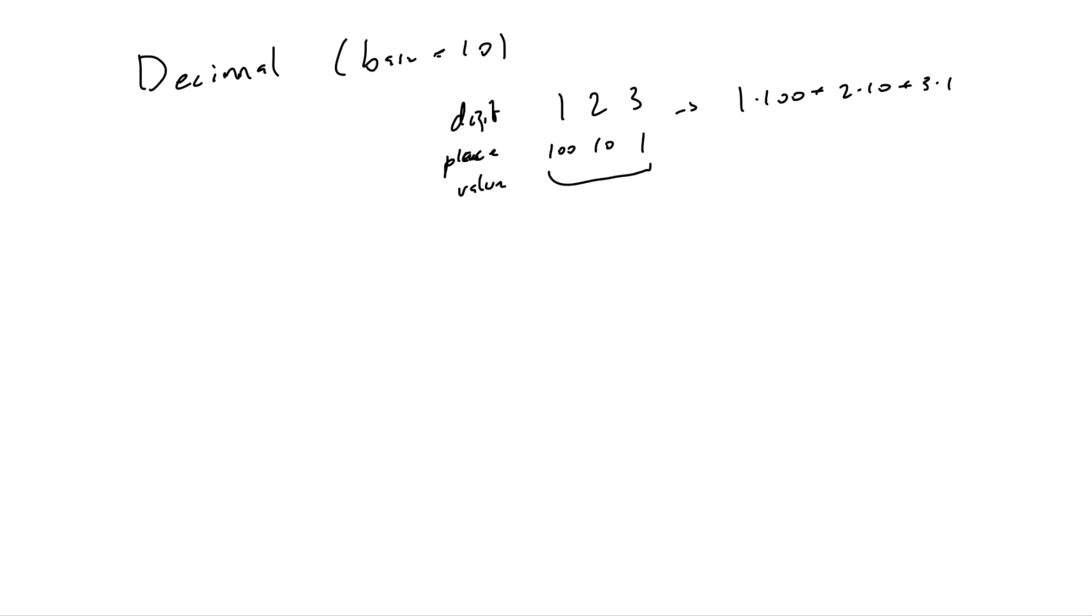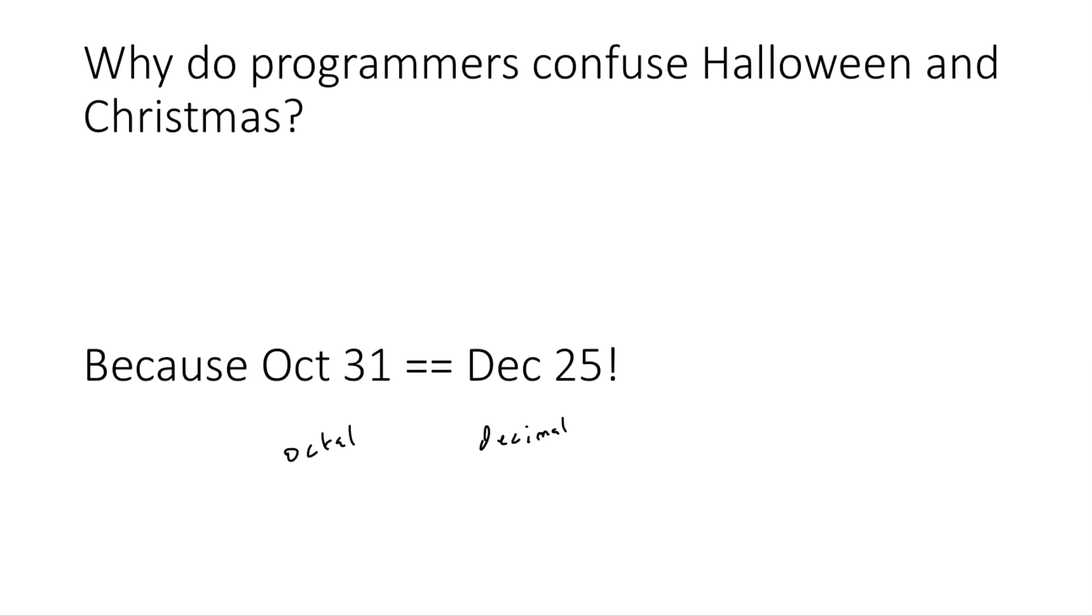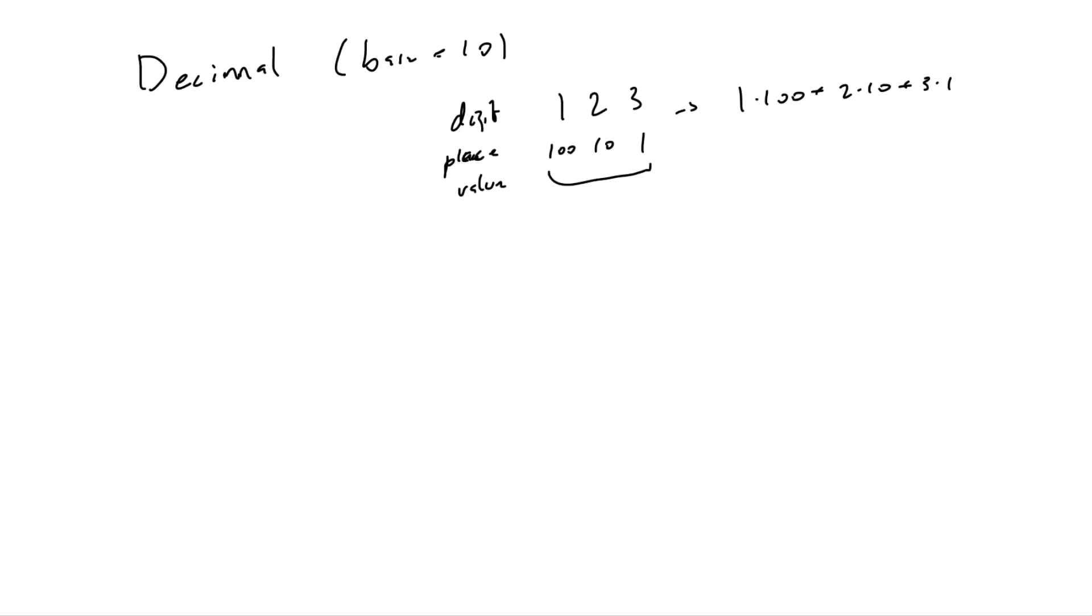And so what we had before in this joke, part of the joke was Dec 25, so decimal 25. And so we can draw a table, and it's going to be a very small table in this case, but it would basically look like this. So we have 25, these are the digits, and then this would be where the place values are. And so the 2 is in 10 to the 1, which is just 10, and the 5 is in 10 to the 0, which is 1. And so to calculate this, we would do 2 times 10 to the 1, plus 5 times 10 to the 0, which is just 2 times 10 plus 5 times 1, which is a value of 25.